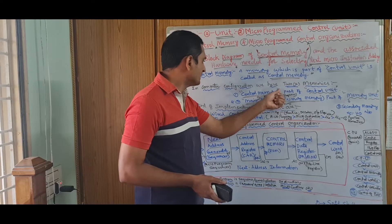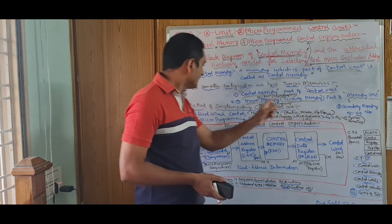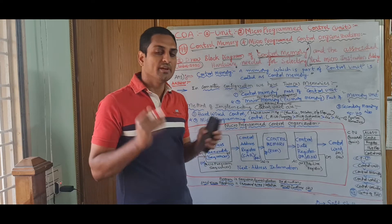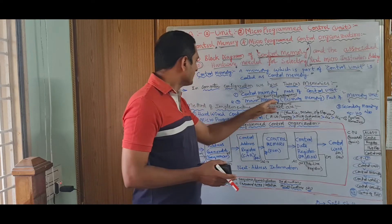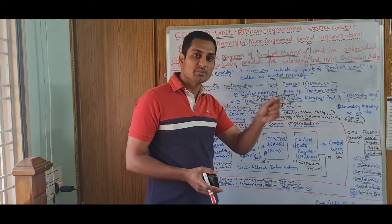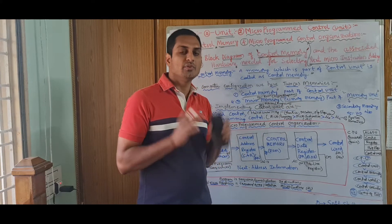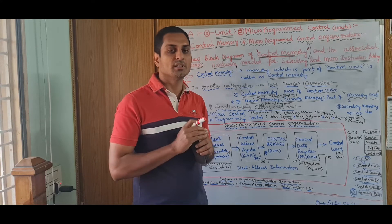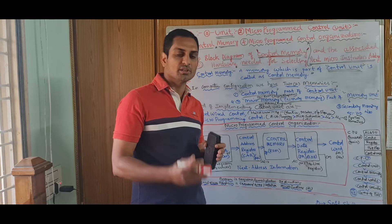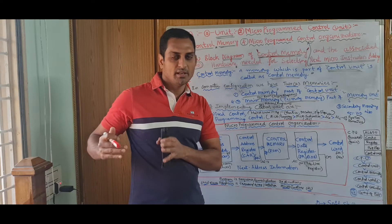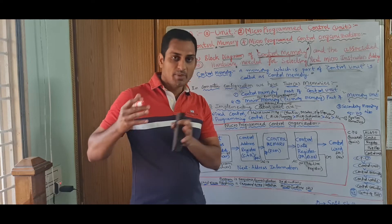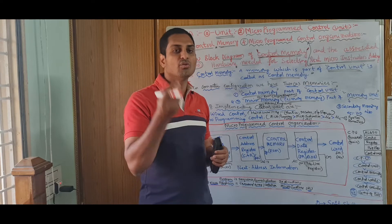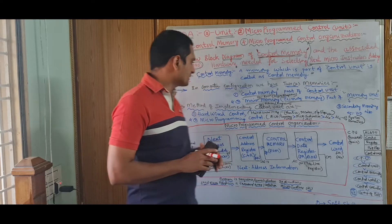Coming to control memory — it is a part of the control unit, and its example is ROM, read-only memory. In ROM you can only read; we cannot write in it. It contains micro programs — micro means small programs. The chip is already designed. When companies design an i7 or i11 processor, they design the control unit, control memory, ALU, and all sub-parts. While designing the control unit, they use micro programs.